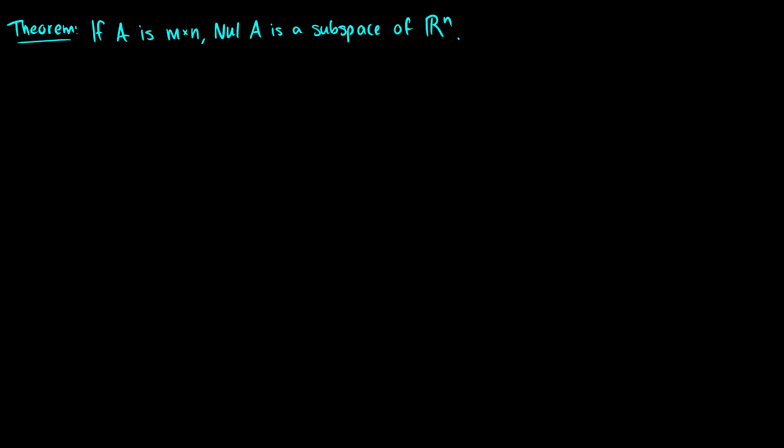If A is m by n, then the null space of A is a subspace of R^n. We want to prove this. Of course, since we're calling it a null space, it should be a subspace — but we need to prove it. First, we have to check if the zero vector is in null(A).